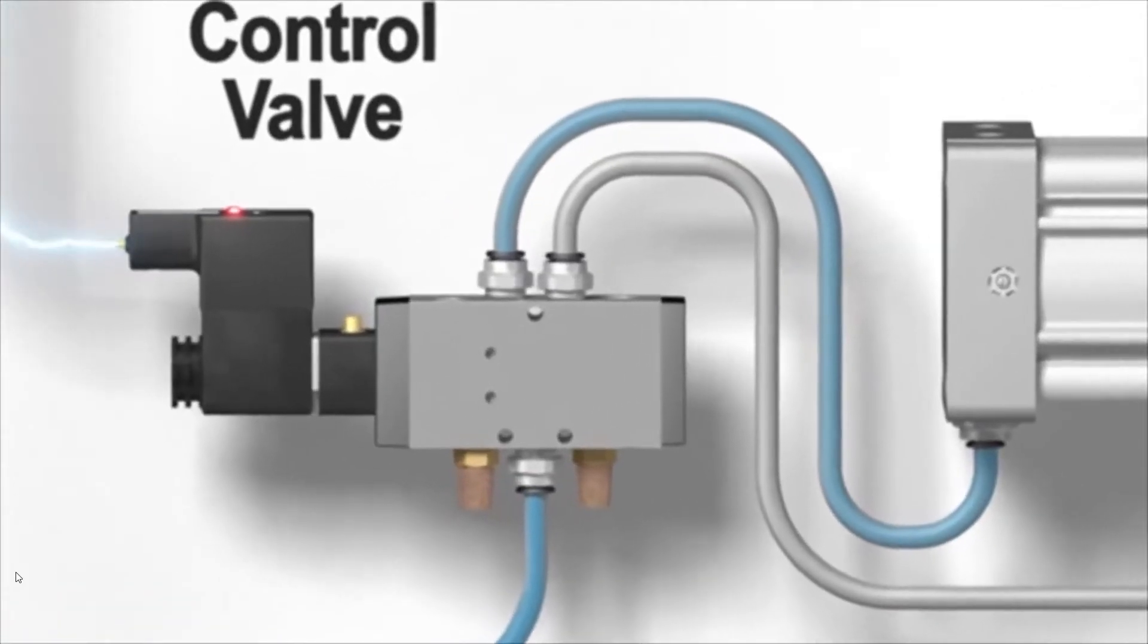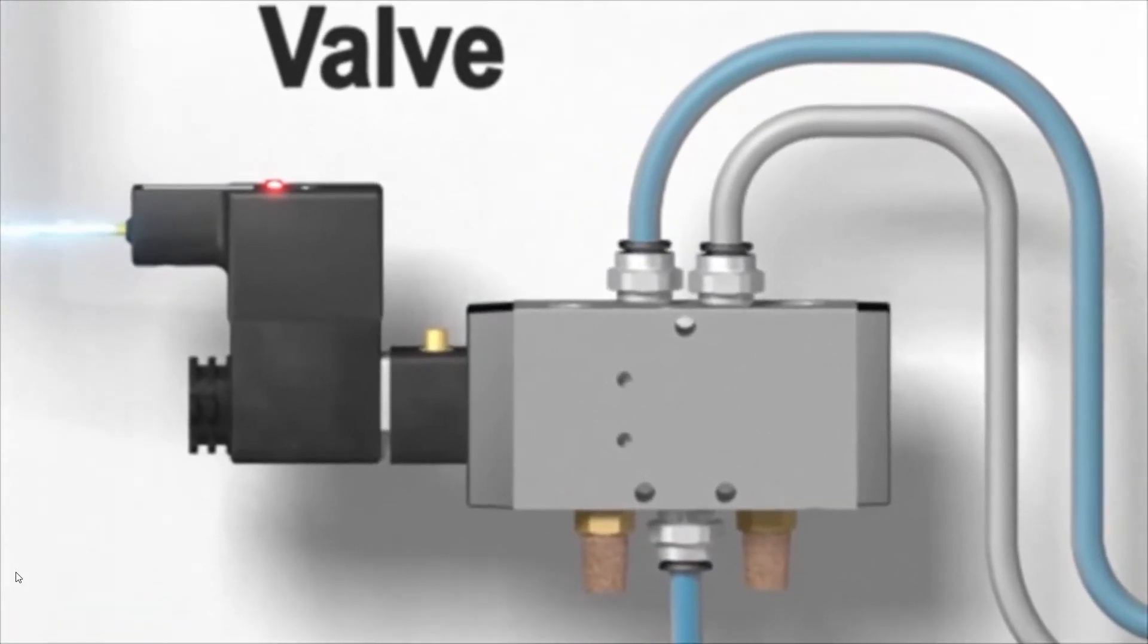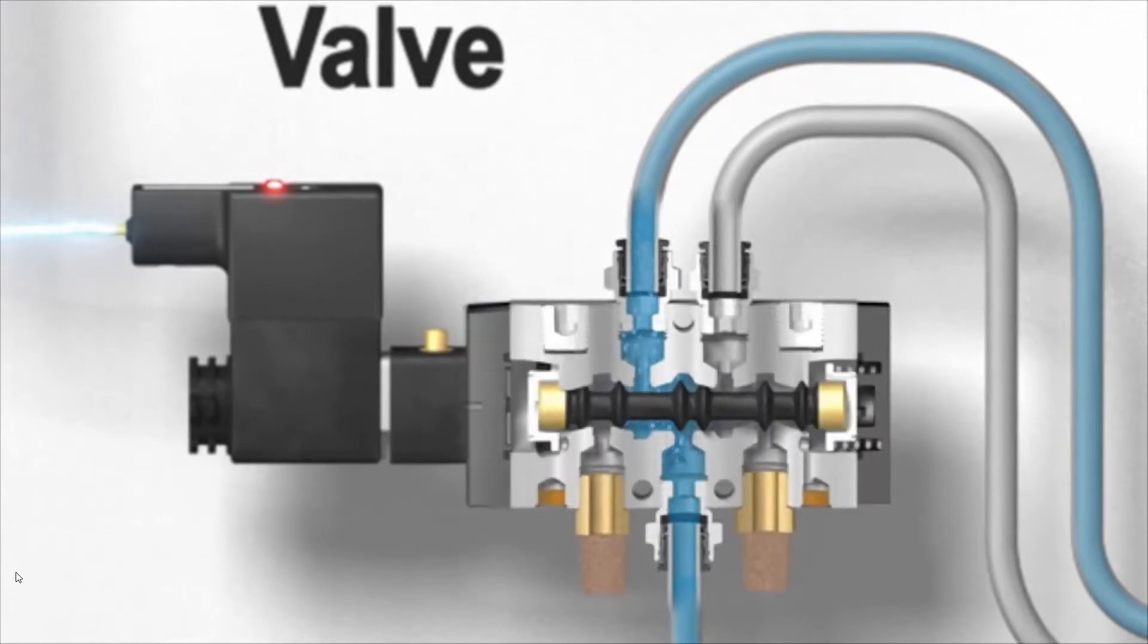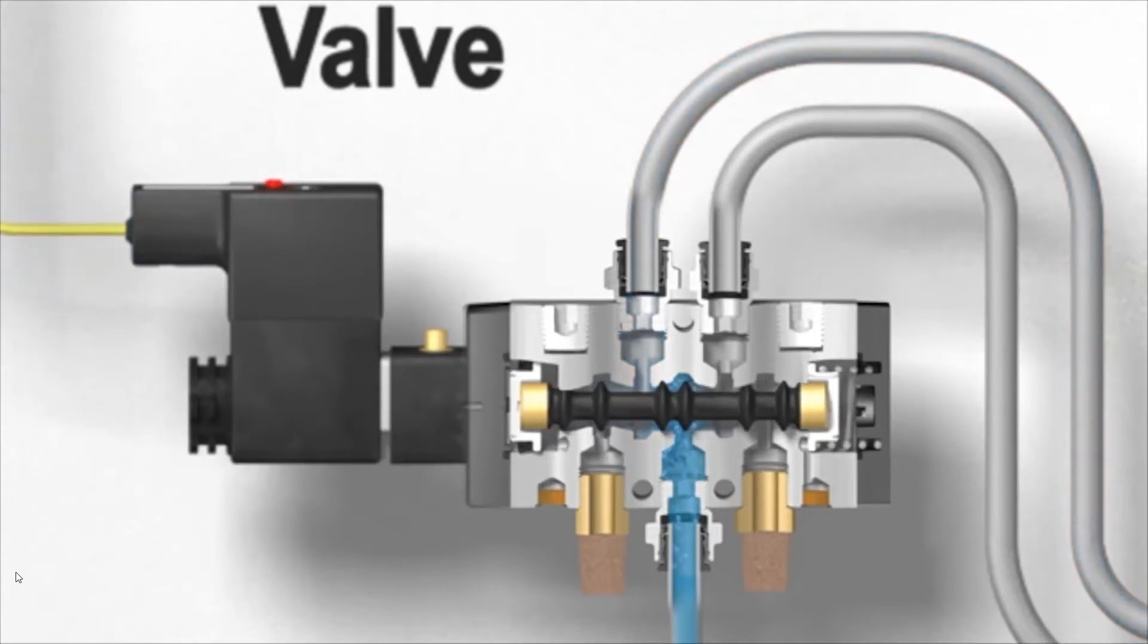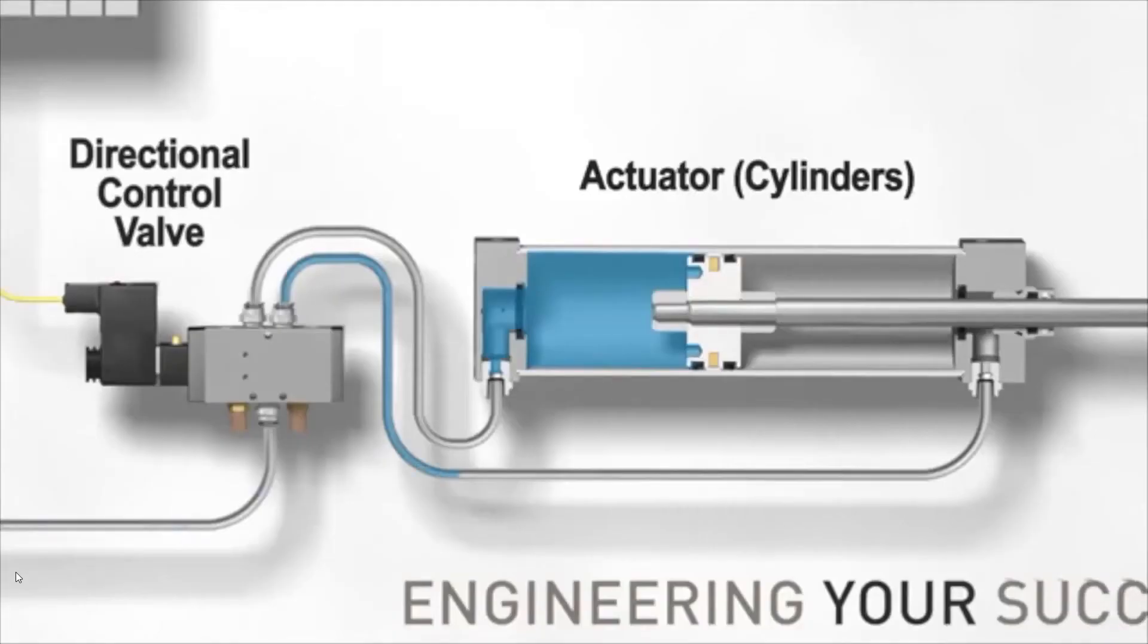Now that we have completed the extension, we will need a method to retract the actuator to its original position. The directional control valve will achieve this by changing the direction the compressed air flows from number four working port to the number two working port. The number two working port is connected to the head end of the actuator, and when the compressed air pushes on the opposite side of the piston, it will reverse the direction of the piston rod assembly.